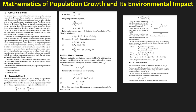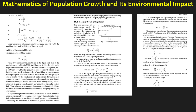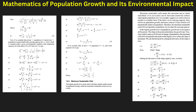Mathematics of population growth and its environmental impact. Population growth follows mathematical models like exponential and logistic growth. The rapid increase in population exerts pressure on natural resources, leading to overconsumption and pollution. Urban expansion, waste generation, and energy demand rise with population density. The carrying capacity defines the maximum population an environment can sustain without degradation. Unchecked growth results in food shortages, water scarcity, and habitat destruction.